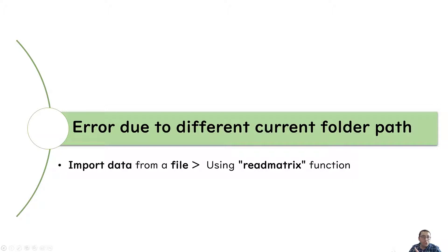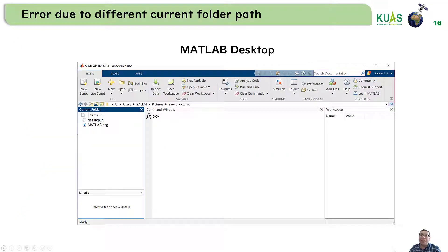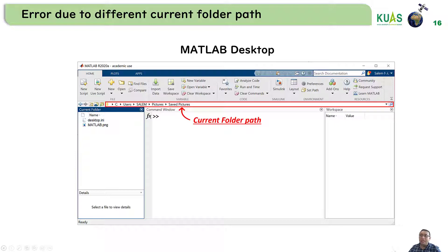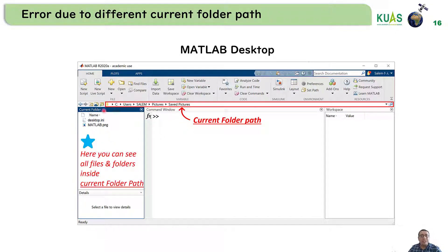For both cases it's important to check the current folder path in order to read the data. Let's check what the current folder path is. In the MATLAB desktop, the current folder path is shown at the top. This is where MATLAB will try to read the file or save the file.